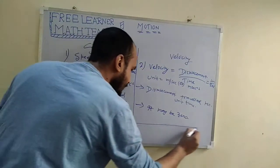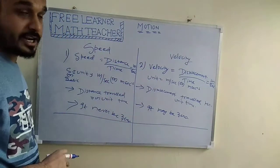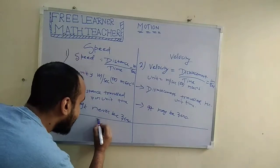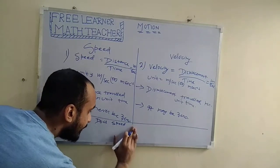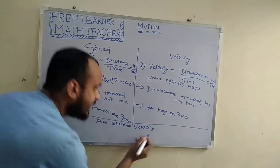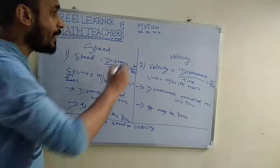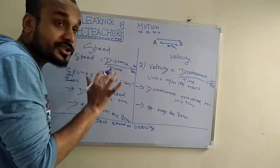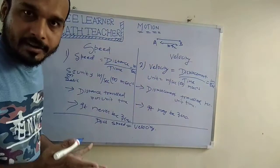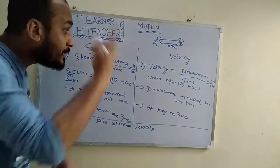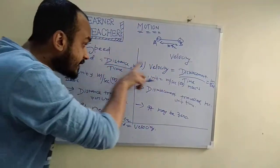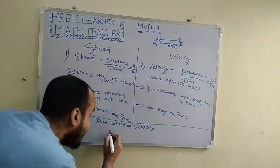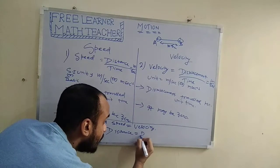Now, does speed equal velocity in any case? If an object goes from A to B covering 10 km with no return, then distance equals displacement — both are 10 km. When distance is equal to displacement, speed becomes equal to velocity. So speed equals velocity when distance equals displacement.